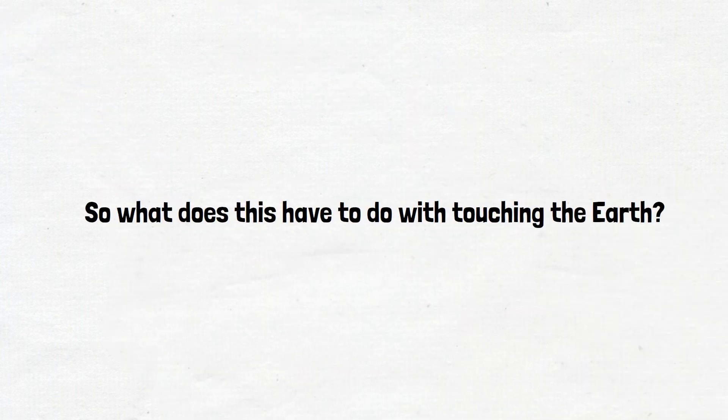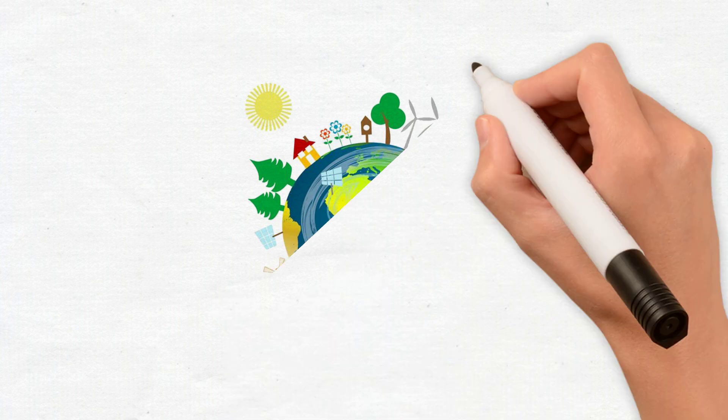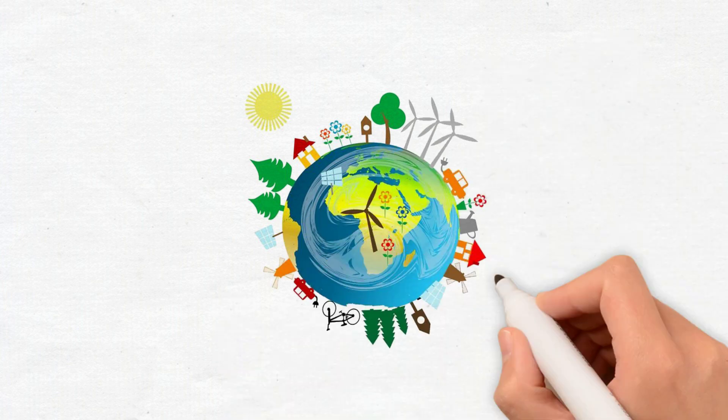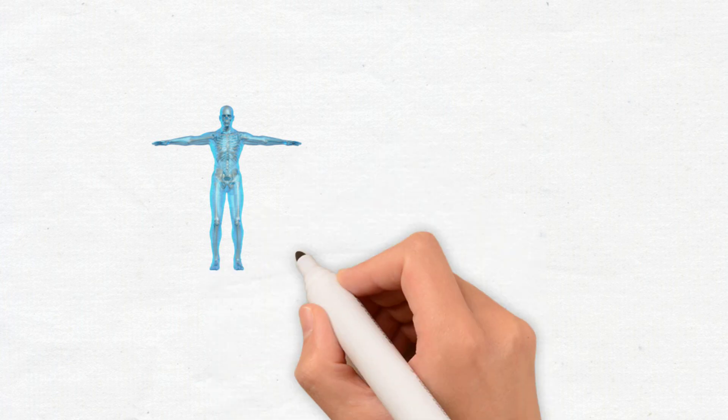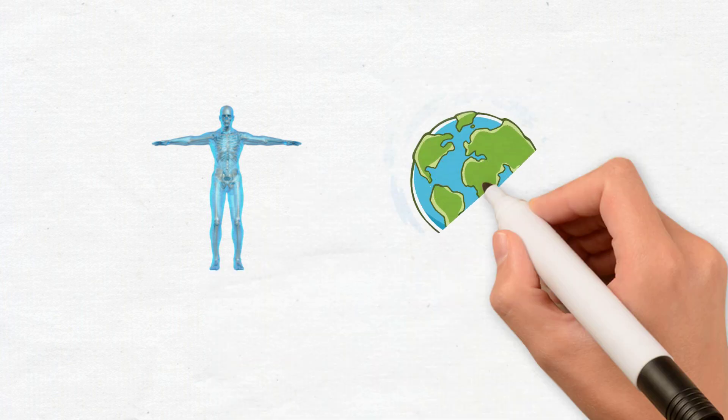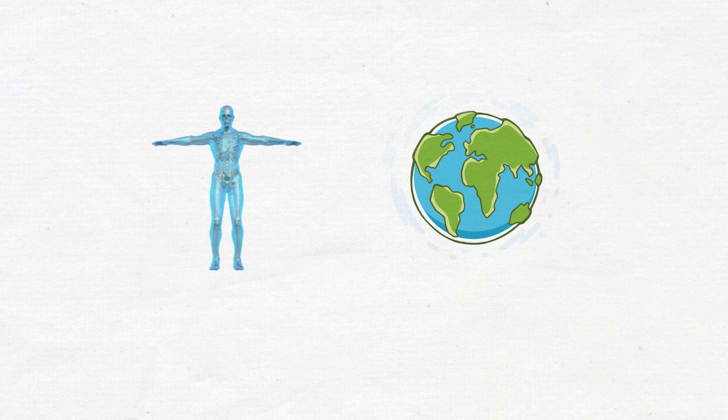So what does this have to do with touching the Earth? The Earth, as it turns out, has a virtually limitless supply of free electrons. Anytime two conductive objects come in direct contact with one another, in this case the human body and the Earth, electrons will flow from where they are abundant to where they are scarce.